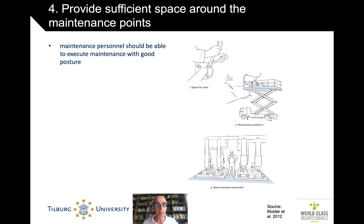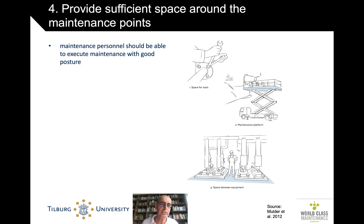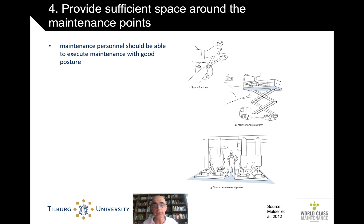Another very straightforward point, but so often missed: have enough space around the maintenance points. Some ship designs place air conditioning under a staircase to save space, but then you can't maintain it anymore. There are also examples from rolling stock where placement wasn't thought through. Space between equipment and maintenance platforms, the ability to reach elevated positions, and enough room to use your tools — all obvious, yet often cumbersome in practice.